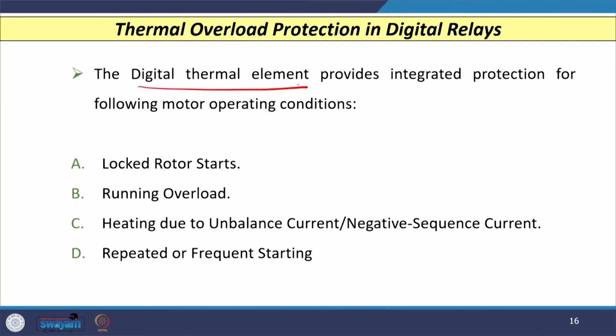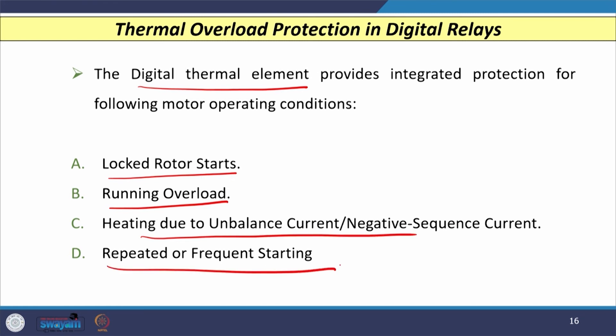In digital relays, a special element is provided known as the digital thermal element, which provides overall comprehensive protection for different motor operating conditions — locked rotor, running overload, heating due to unbalanced or negative sequence currents, and repeated or frequent starting. The digital thermal element gives integrated protection for all these conditions in a better way compared to previous generation electromechanical and static relays.